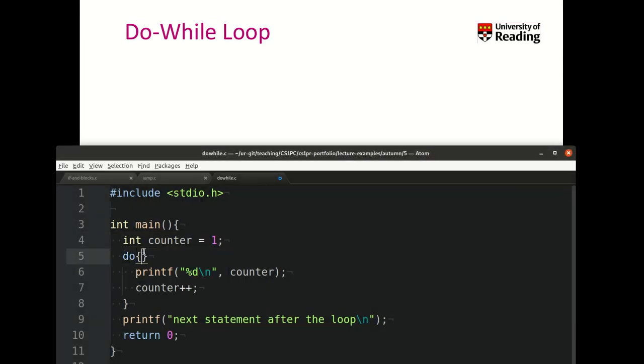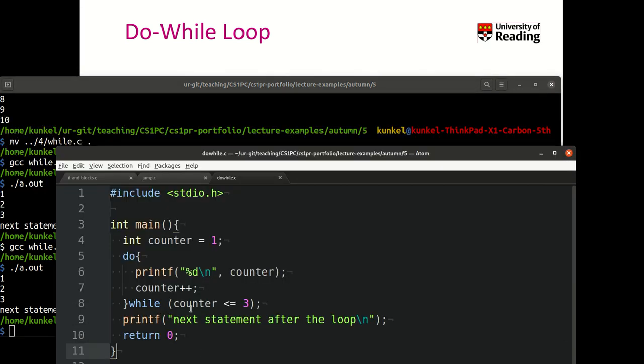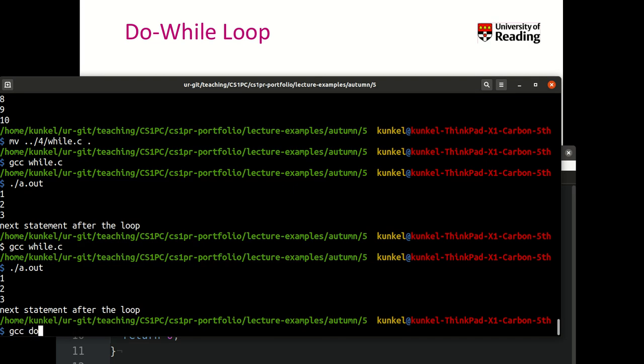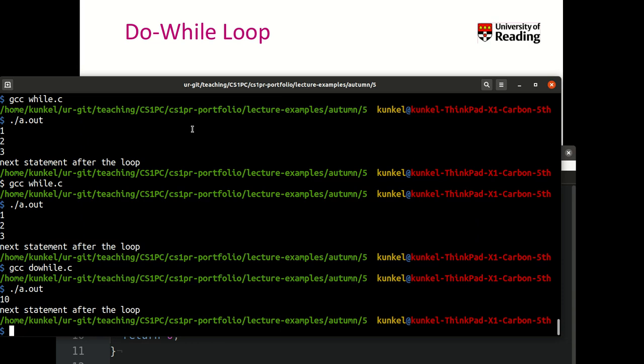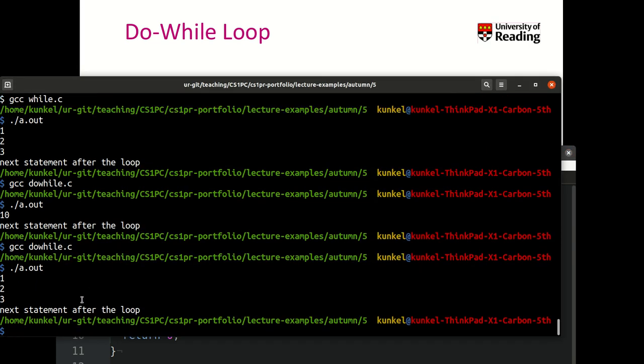We say do this while counter is less or equal than 3. Does this make a difference in this example? No, it doesn't. For the reason that we, in this case, will loop over this code always more than once. But if I would set the counter, for example, to 10, then you would find that I would print 10, I increment it to 11, and then I perform the check in our while condition to see that this condition is not met, and I would exit my code. Let's try it. Do while. I would print 10 and I would exit the loop. Let me revert the example case back. One, two, three. Next statement after the loop. That works.